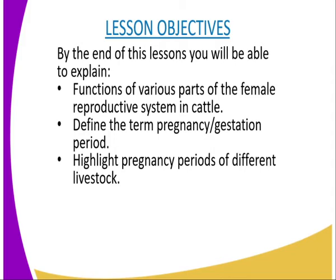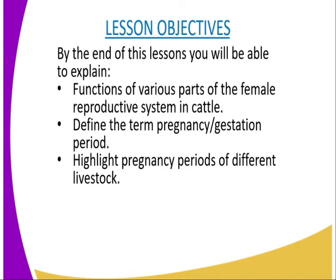We will also highlight pregnancy periods of different livestock reared on the farm. The term ovulation means the process of releasing a mature ovum into the oviduct. The term pregnancy, or gestation period, refers to the duration between the time of conception up to the time of giving birth.